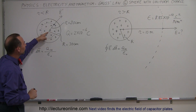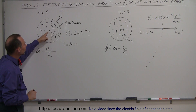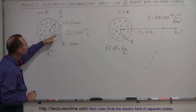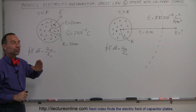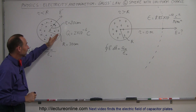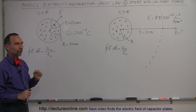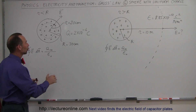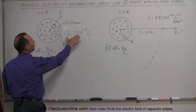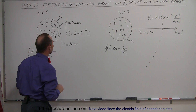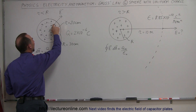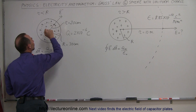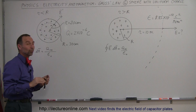We want to know the electric field strength 20 centimeters away from the center, but still inside the sphere because the sphere has a radius of 30 centimeters. The total charge in the sphere is 2 times 10 to the minus 6 Coulombs. What's the electric field strength at that location?